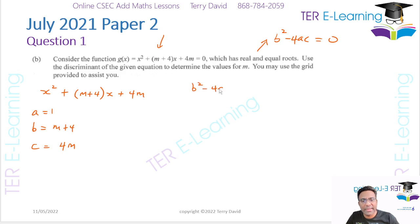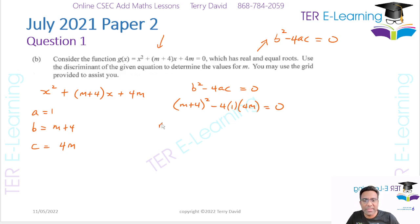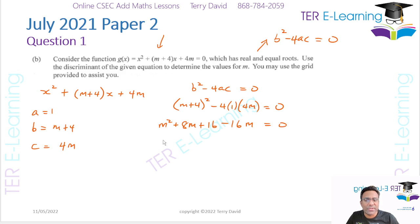Since b squared minus 4ac equals 0, we have (m plus 4) squared minus 4 times 1 times 4m equals 0. Expanding: m squared plus 8m plus 16 minus 16m equals 0. Simplifying: m squared minus 8m plus 16 equals 0.